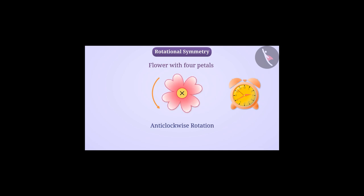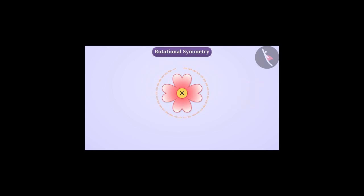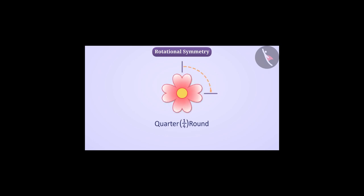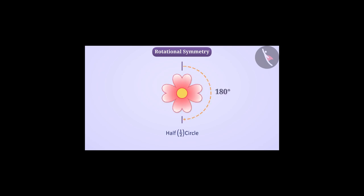It is not necessary that the object should always rotate a full 360 degrees. Rather, we can also rotate it for any angle — like a quarter of a round. During a quarter round, the figure rotates by an angle of 90 degrees. Similarly, if we rotate the figure for a half circle, the figure rotates by an angle of 180 degrees. The angle rotated during rotation is called the angle of rotation.